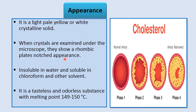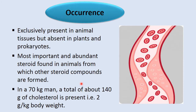Regarding cholesterol's appearance: it is yellow in color and a white crystalline solid. When examined under a microscope, it shows a rhombic shape with notched plates. It is insoluble in water and soluble in chloroform, and it is a tasteless, odorless substance with a melting point of 149–150°C.